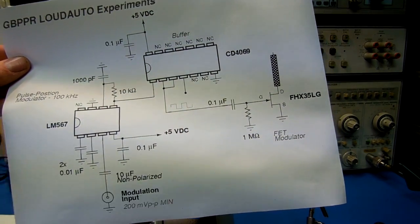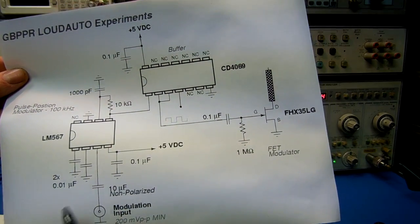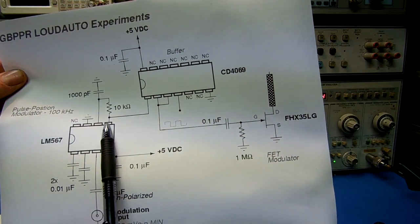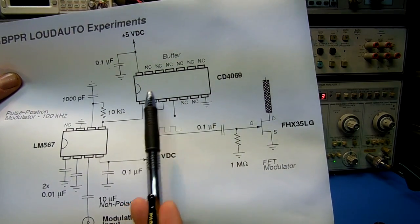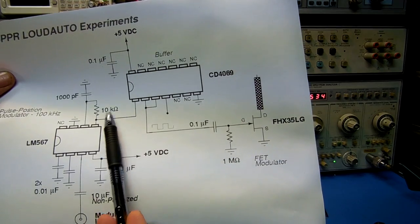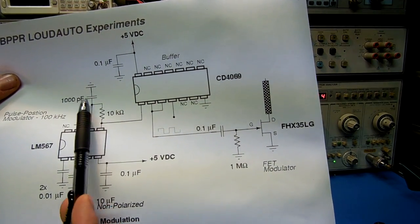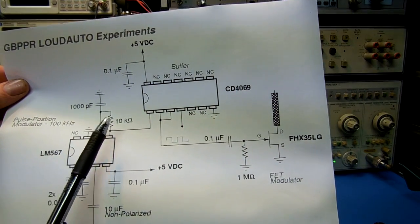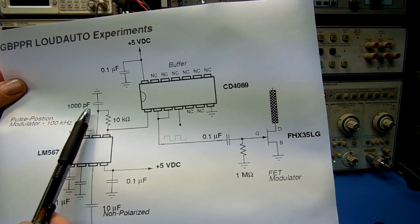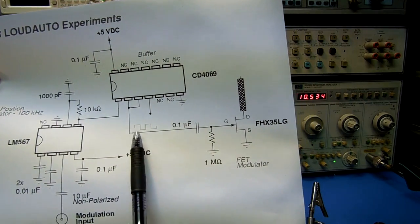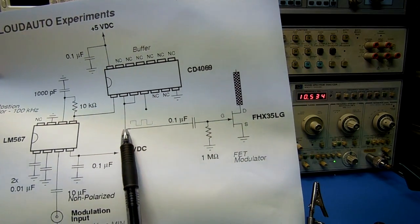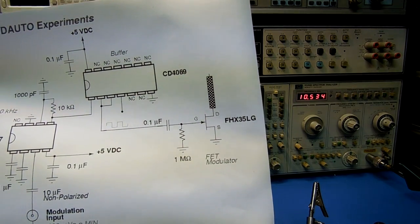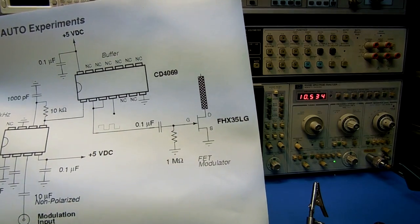I don't have a microphone on it; this is just an example. The output of the pulse position modulator at pin 5 needs to be buffered with a standard hex inverter to prevent loading the oscillator. The frequency is determined by the 10 kilohm resistor and 1000 picofarad capacitor. The buffered pulse train is then sent to the standard FET modulator.